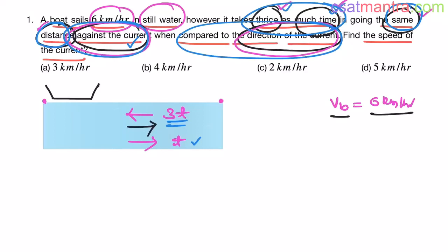When you are moving in the same direction as the river, you take less time. When moving against the river — opposite to the river flow — you take more time. In both cases, distance is the same. Case 1 is moving in the direction of current; Case 2 is moving against the current. Let's call the distance D. We don't know river velocity — let's call it VR.